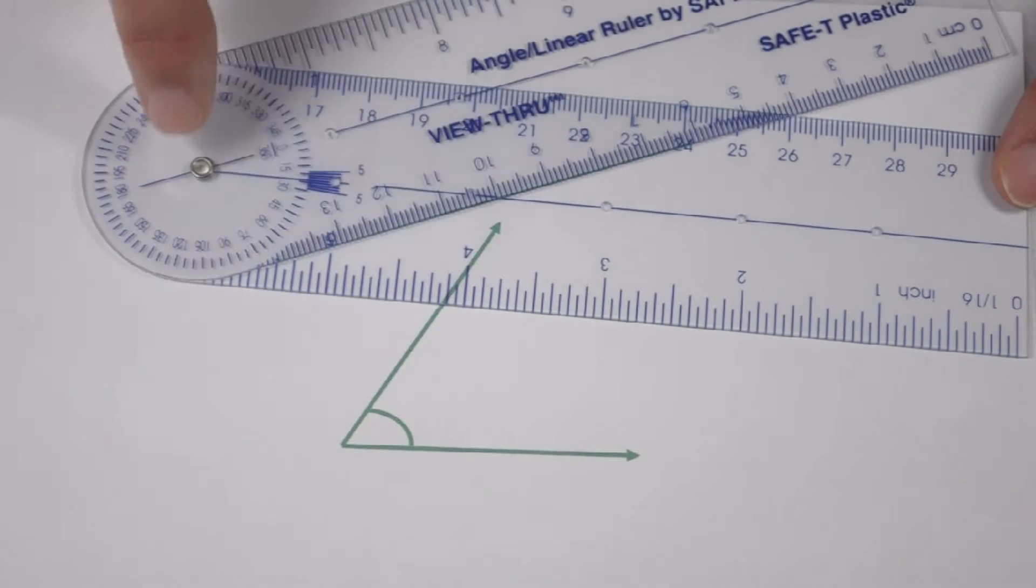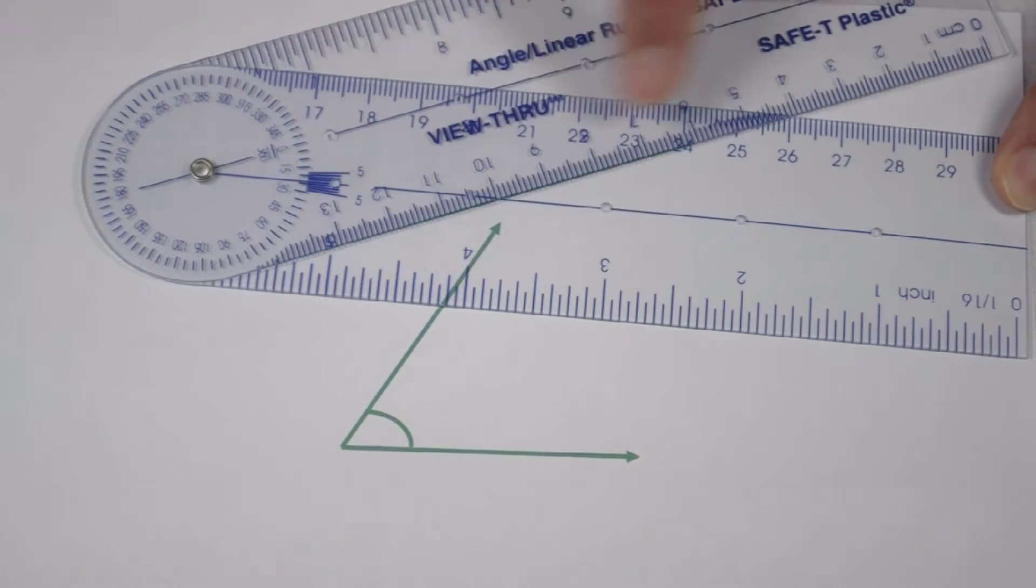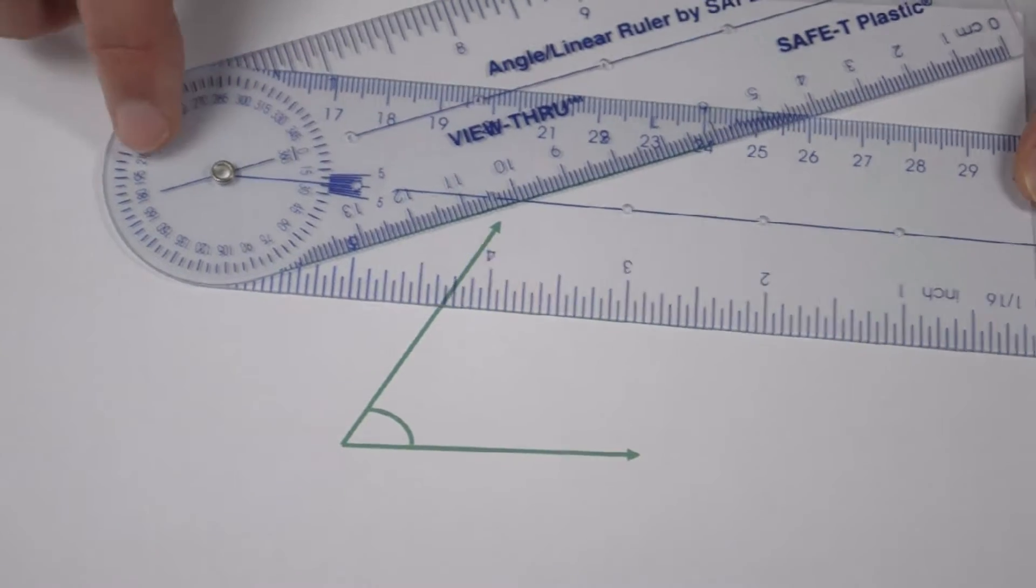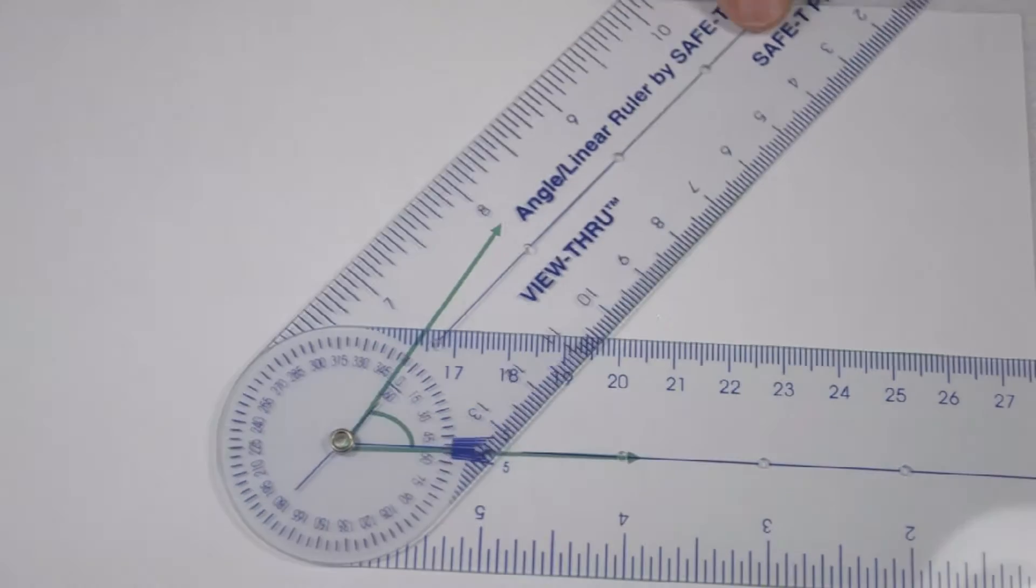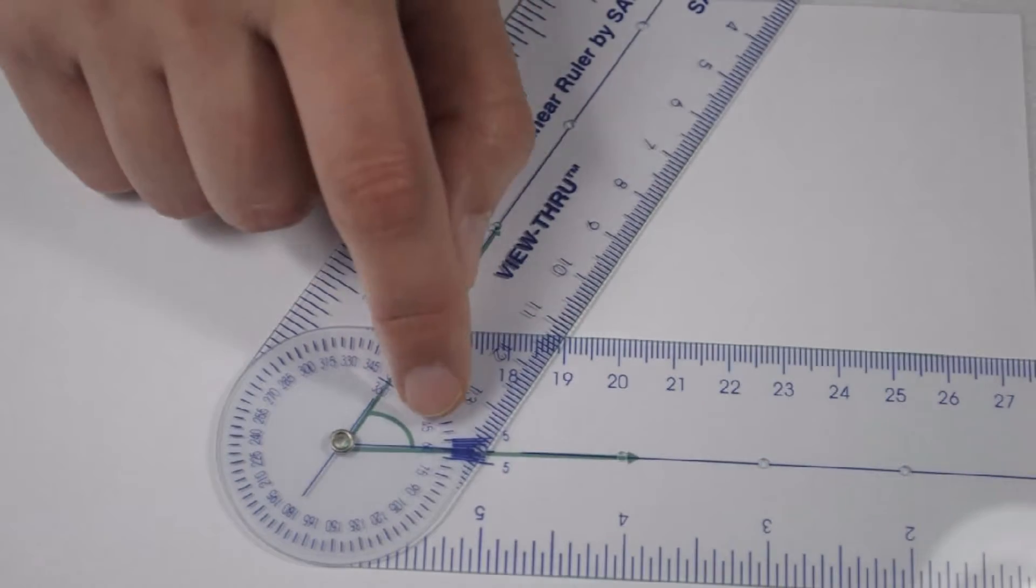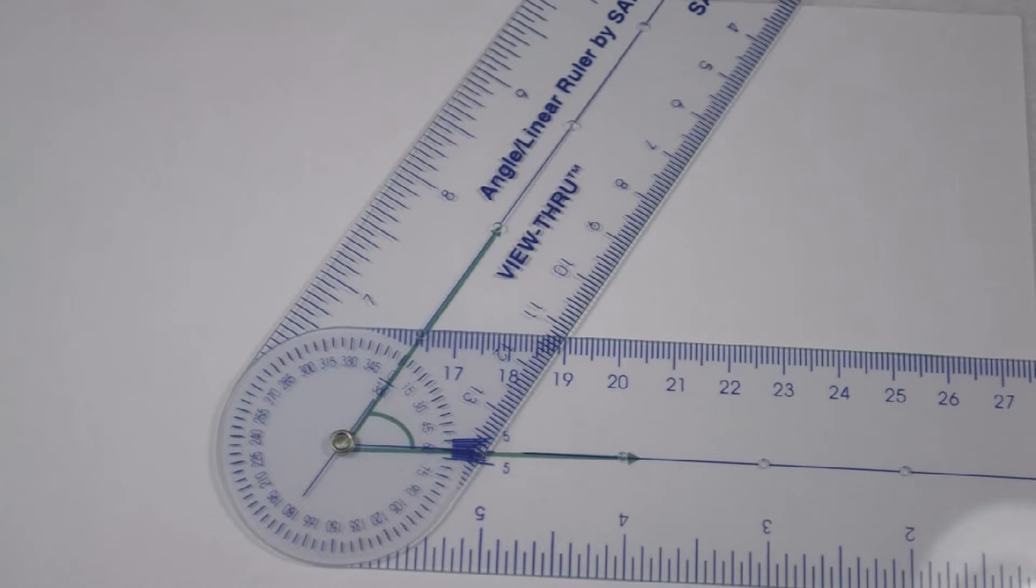We're again going to line up the vertex with the rivet, the bottom ray along this blue line, and then swing our top arm around until it crosses with the other ray. When we do that, we can see that this angle crosses at 60 degrees. So we know we have a 60 degree angle.